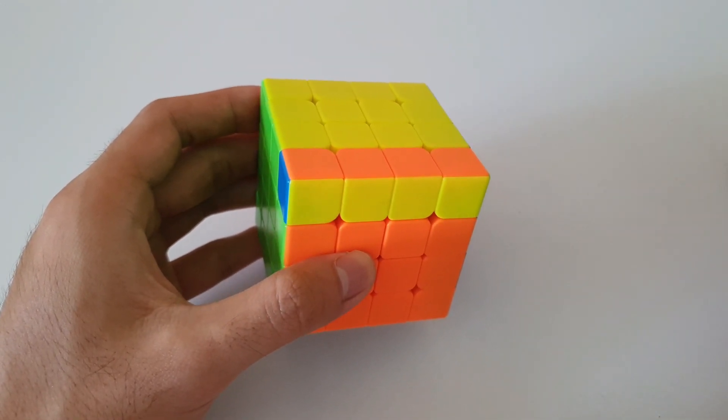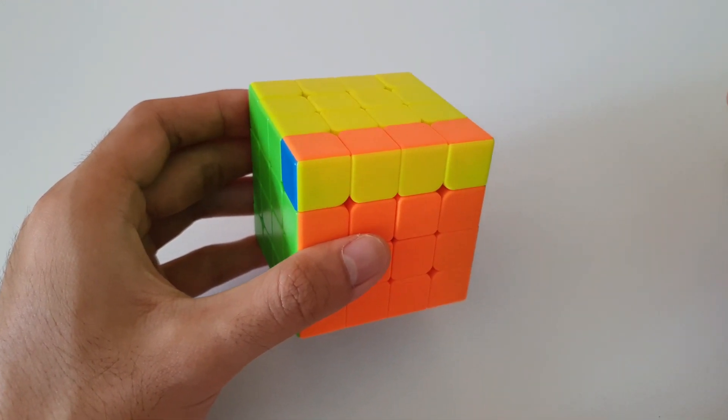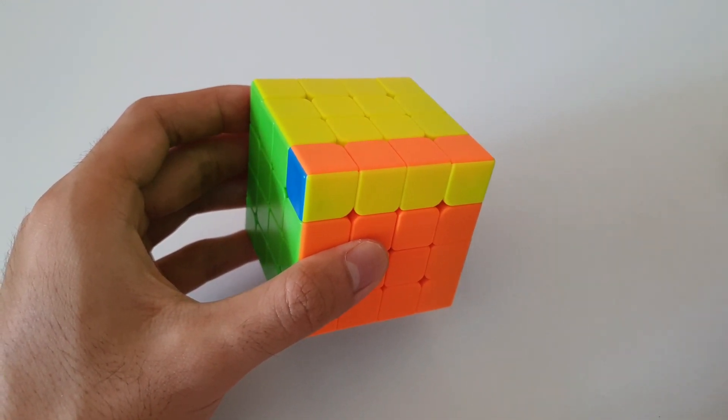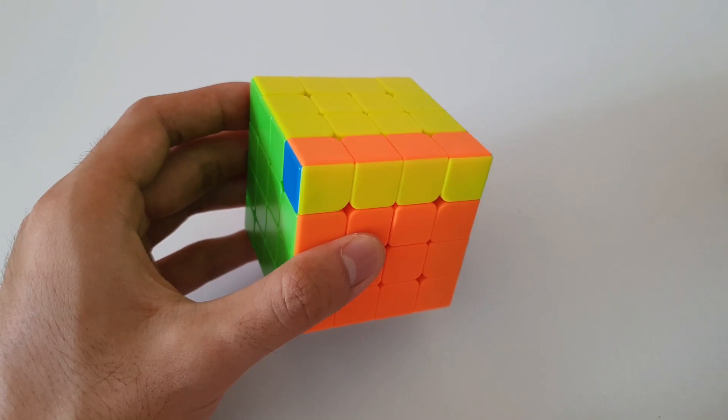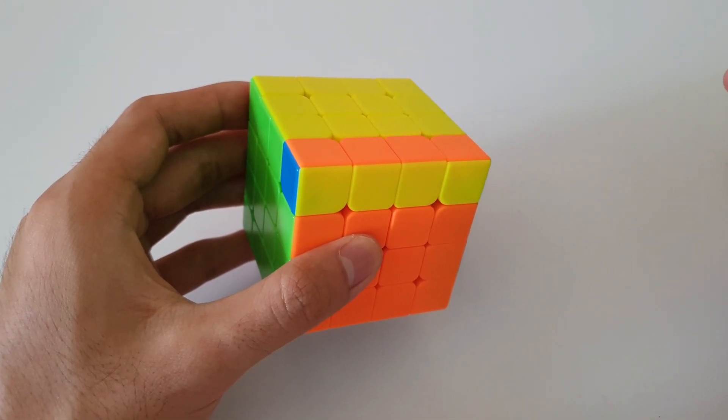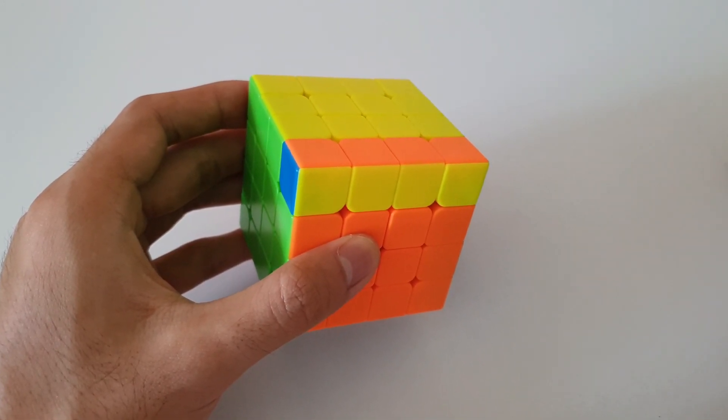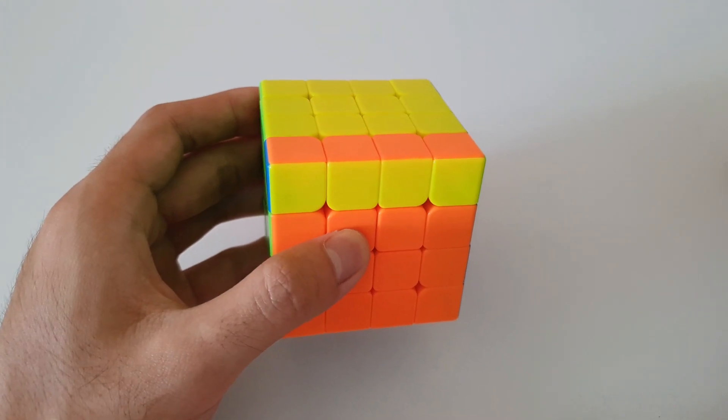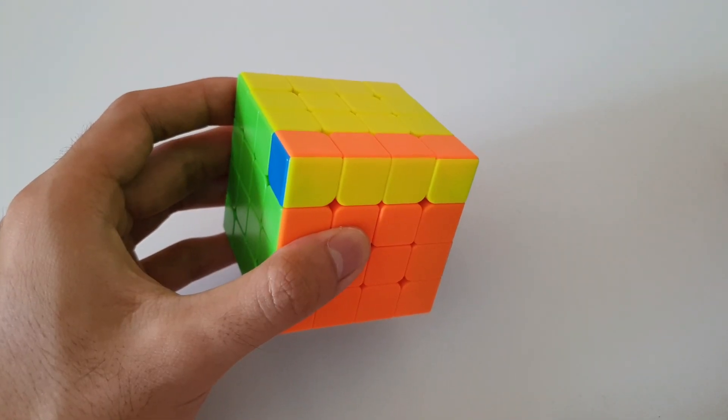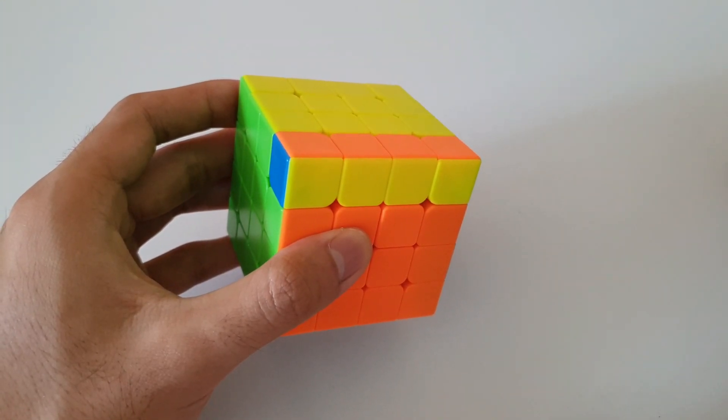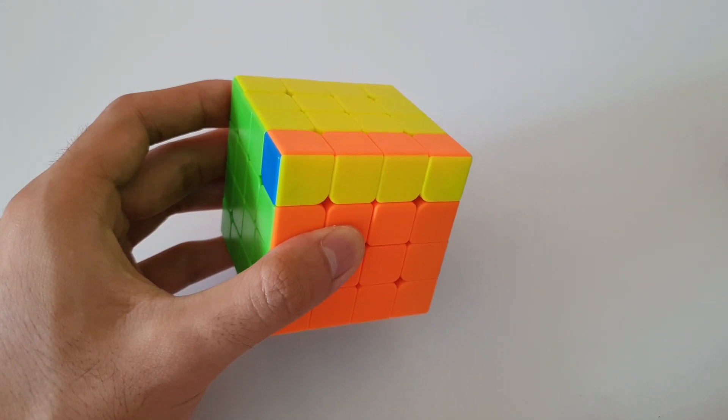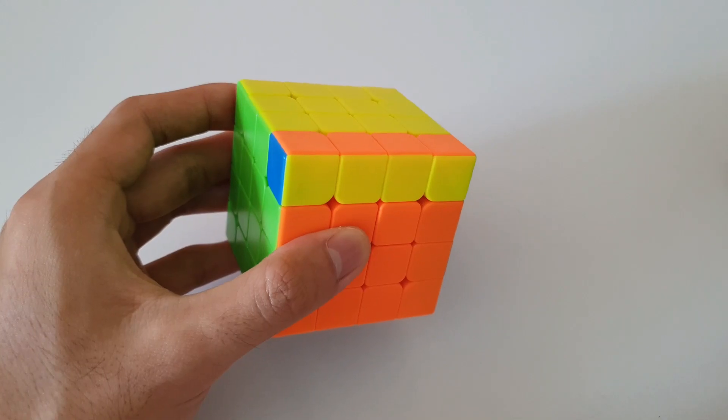If you didn't already know, on the 4x4 cube when you get to last layer you can get OLLs and PLLs that you cannot get on a 3x3 cube, and so you can't solve them using traditional 3x3 algorithms. Because with those you'll be able to reduce these complicated OLLs and PLLs into 3x3 OLLs and PLLs and solve them using your regular algorithms.